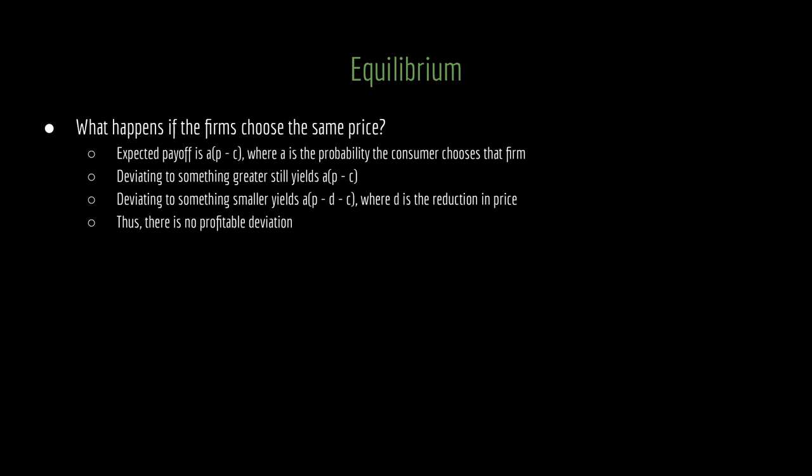Now let's think about deviations. If a firm deviates to a higher price, it still gets a payoff of A times P minus C, because the price is not actually changing. If you raise your price while the other firm stays constant, the consumer still gets the good at the lower price the other firm is offering. So raising your price in isolation does not change your payoff — there is no profitable deviation there. If you deviate to something smaller, you are forcing the price lower to P minus D, where D is the discount. So if you lower your price, you're actually worse off. There is no profitable deviation.